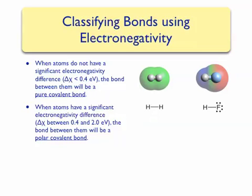A good example of a polar covalent bond is the bond in the hydrogen fluoride molecule. An electrostatic potential map has been generated for HF. Notice that the colors are different: the hydrogen atom on the left has more of a blue color around it, because hydrogen, being the less electronegative atom, will have less electron density around it. The color around the fluorine end of the molecule is red, indicating that the fluorine atom has more electron density due to its higher electronegativity.